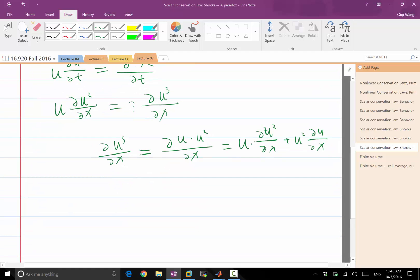The same thing can be represented as the derivative of U times U times U, which equals U² times ∂U/∂x times 3.